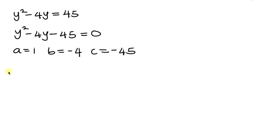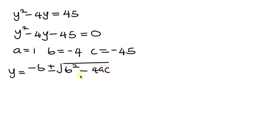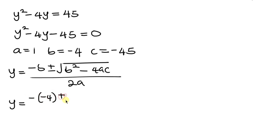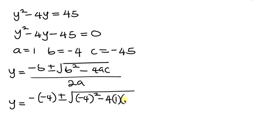Now we're looking for y. So y equals negative b plus or minus the square root of b squared minus 4ac, all over 2a. Substituting: we have y equal to negative b — b is negative 4 — plus or minus the square root of b squared, which means negative 4 squared, minus 4 times a times c, where a is 1 and c is negative 45, all over 2 times 1.